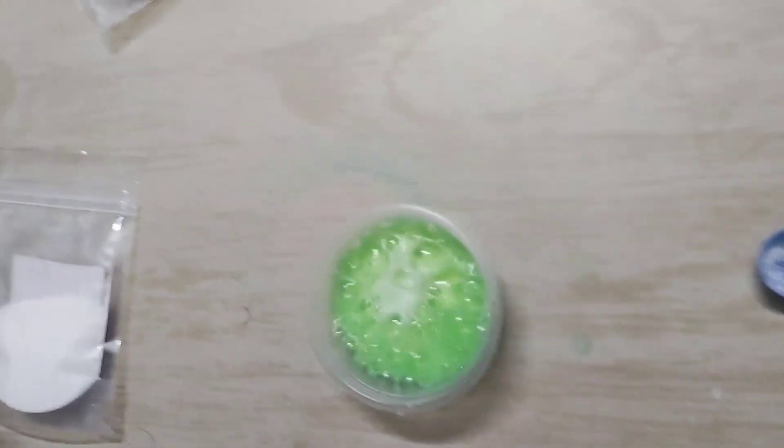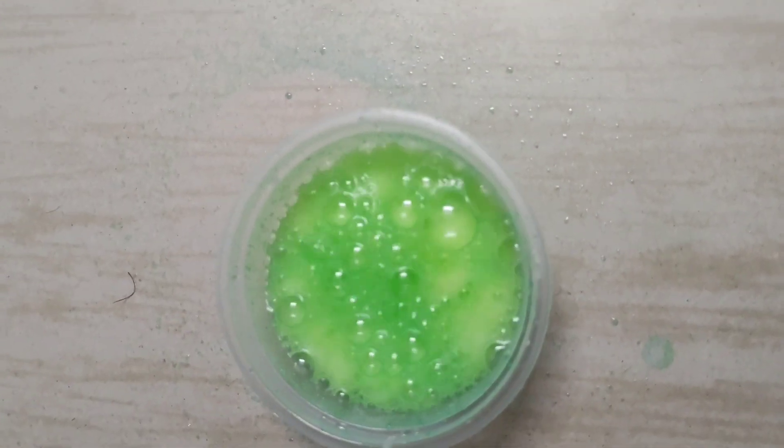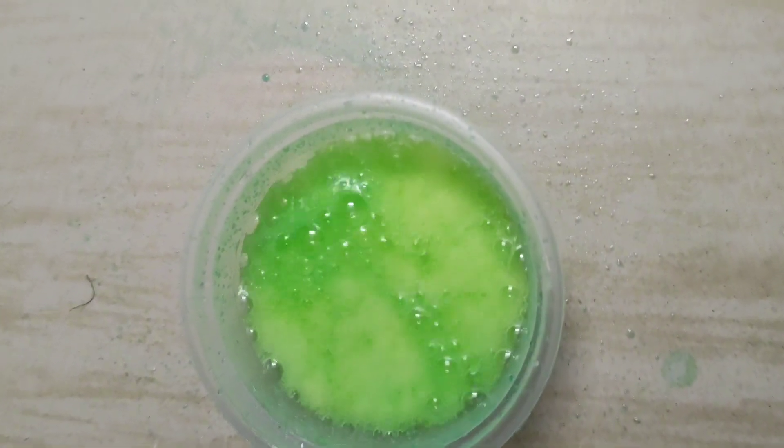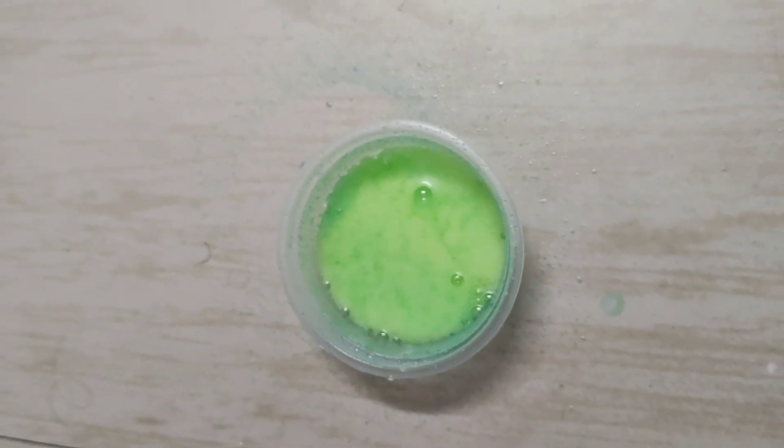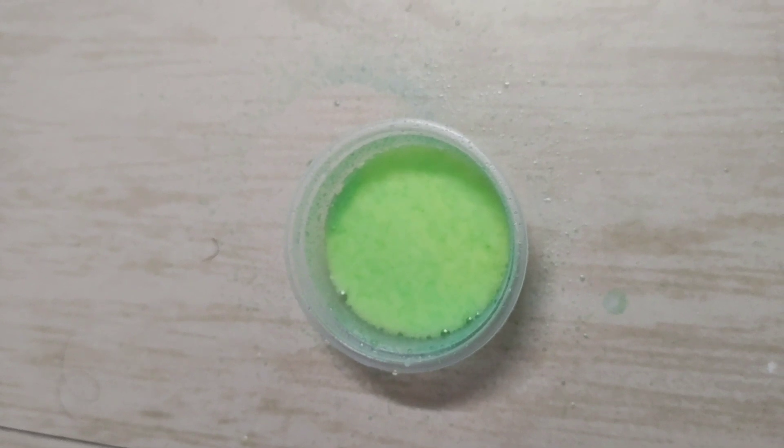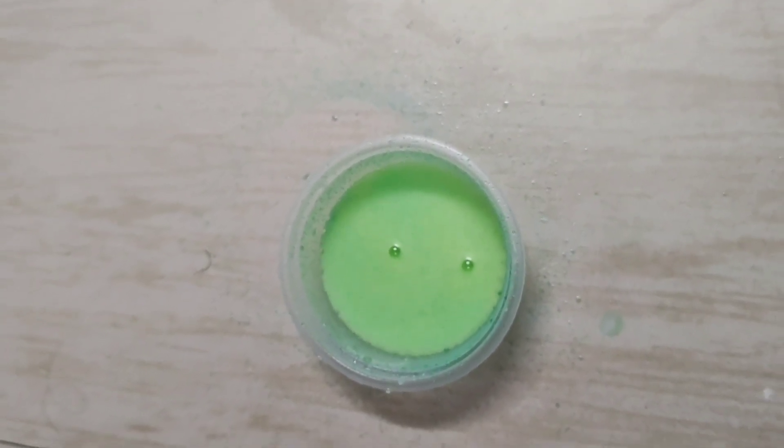You can see that bubbles are coming up. This is called the fizz. Why? Because citric acid and baking soda are mixed. If you add 25 ml of water again and again, you can see the fizz or bubbles in the cup.